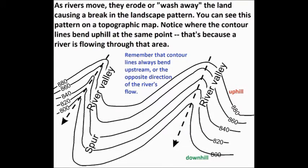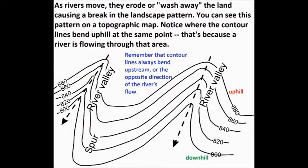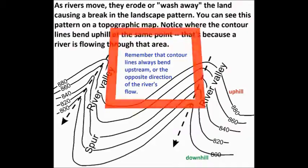As rivers move, they erode or wash away the land, causing a break in the landscape pattern. You can see this pattern on a topographic map. Notice where the contour lines bend uphill at the same point — that's because a river is flowing through that area. Remember, the contour lines always bend upstream, or the opposite direction of a river's flow.